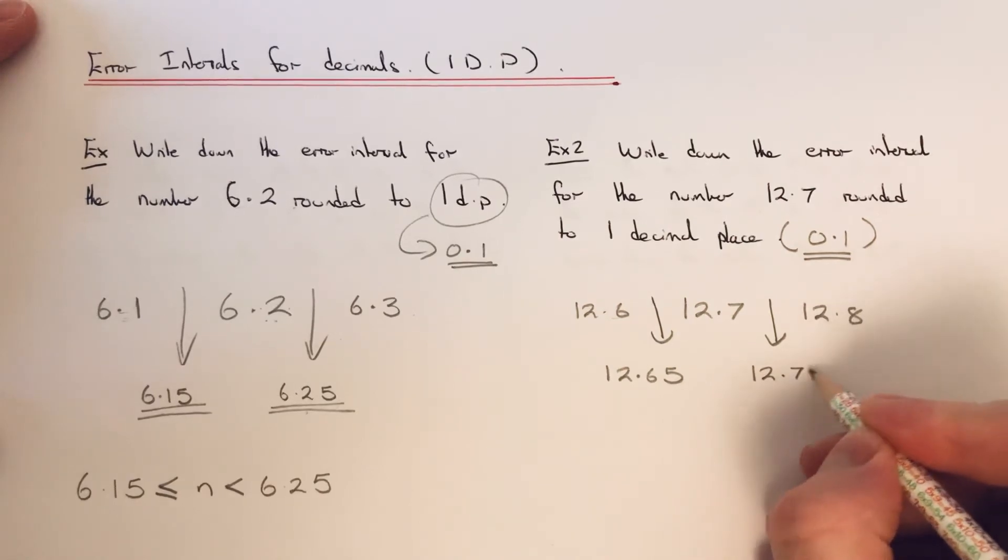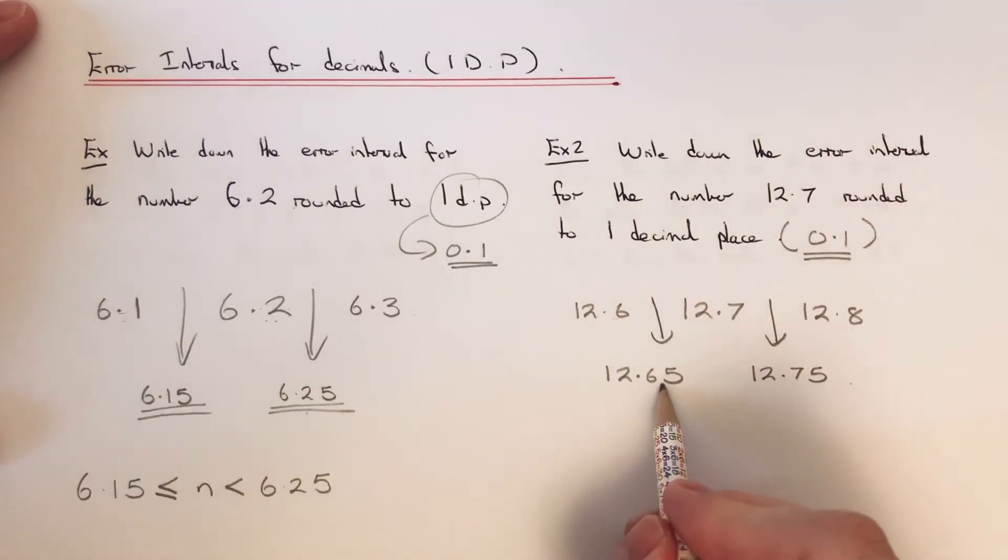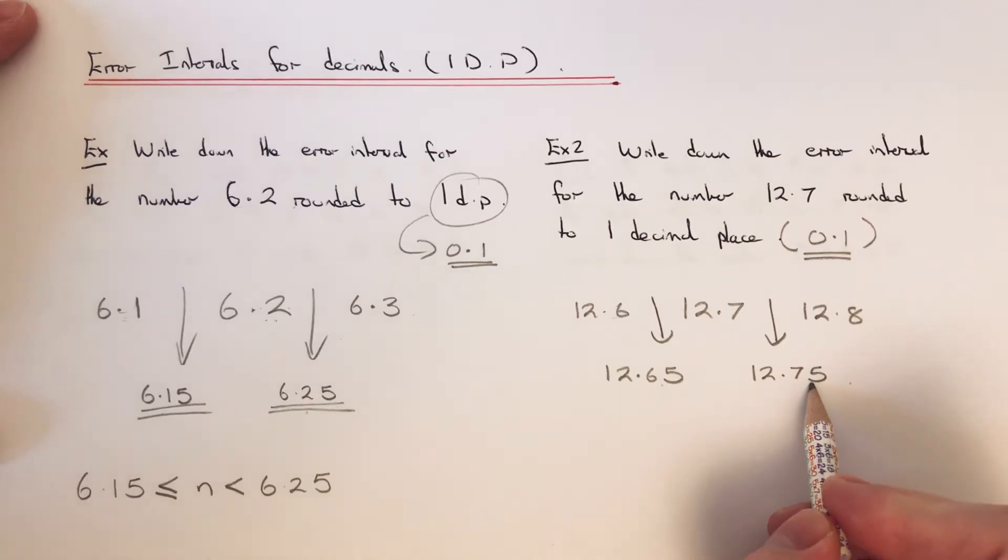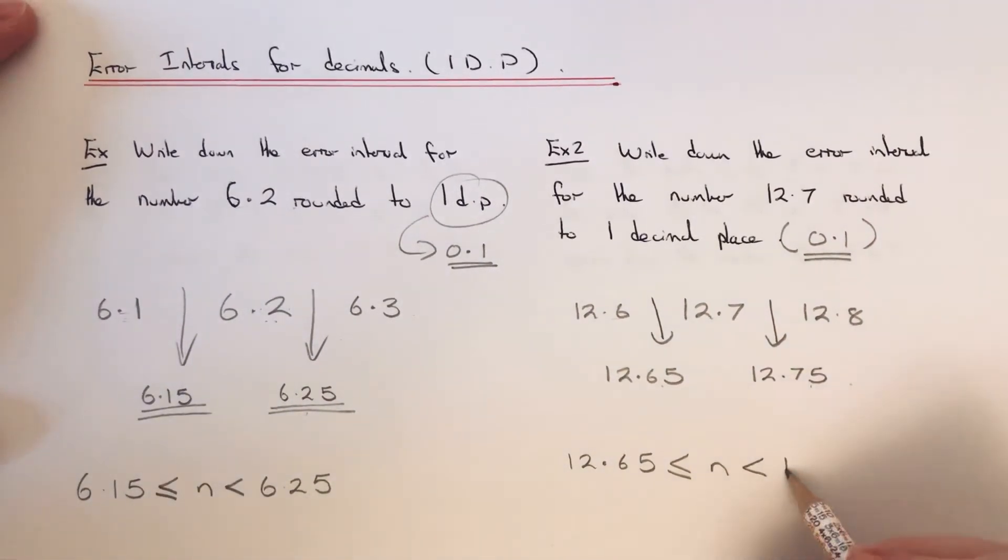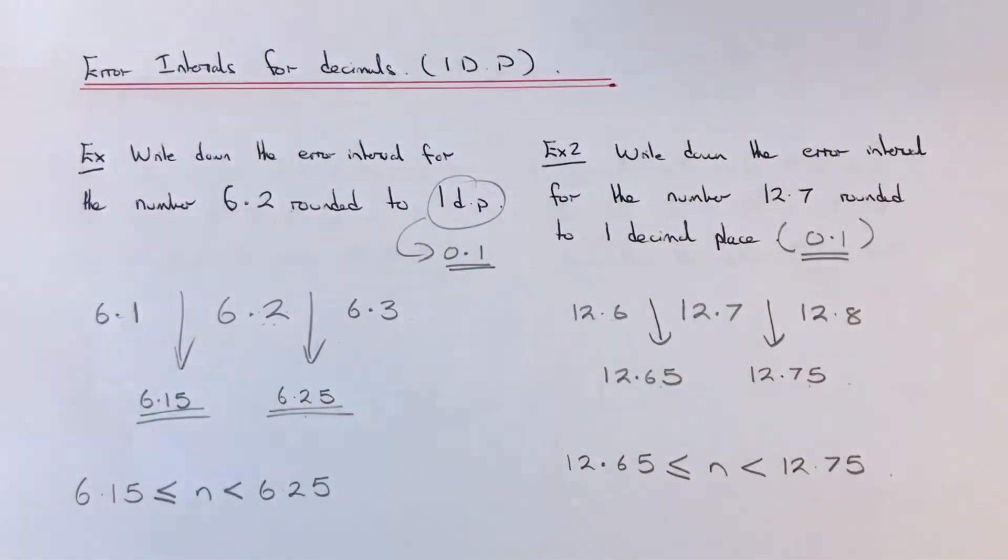So this is our lower bound, this is our upper bound. So we use these to write our error interval down. So we put the lower bound first, then we put the letter n in the middle, then put another less than sign, and then we put the upper bound at the end.